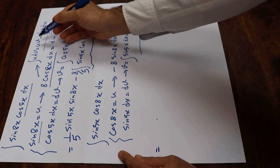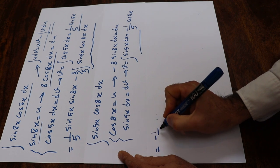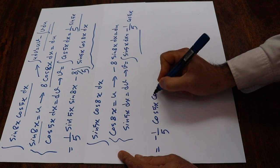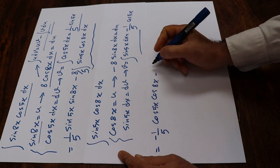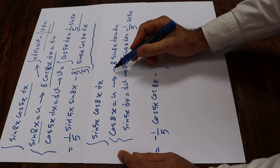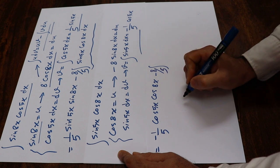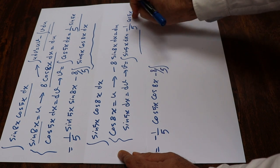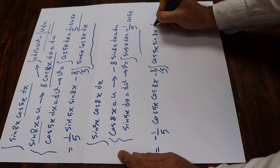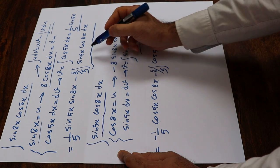Now you need to substitute these expressions into the integration by parts formula to calculate this integral. Therefore this equals u times v: v is minus 1 divided by 5 times cosine 5x, u is cosine 8x. So u times v equals minus 1 divided by 5 times cosine 5x times cosine 8x, minus the integral of v times du. So minus 1 divided by 5 times minus 8 gives 8 divided by 5. It's constant, so I take it outside the integral.